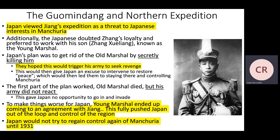The first part worked — they managed to assassinate the old marshal — but his army did nothing. They didn't react, so Japan had no opportunity to invade. To make things worse, the Young Marshal, who Japan thought would be easier to work with, didn't cooperate either. He ended up coming to an agreement with Jiang Jieshi, the nationalist leader, which fully pushed Japan out of control of the region. Japan would not try to regain control of Manchuria until 1931.